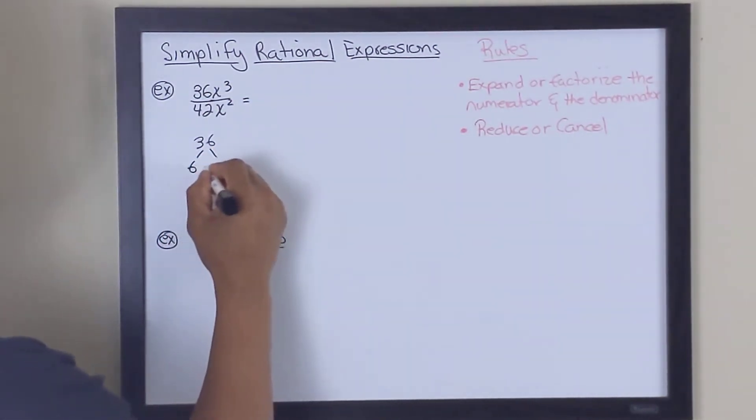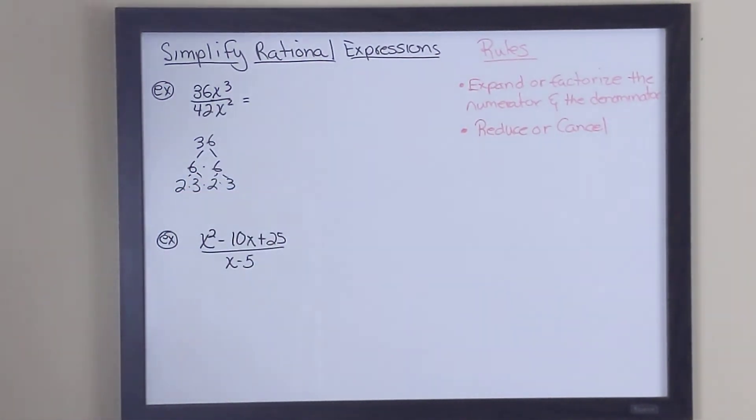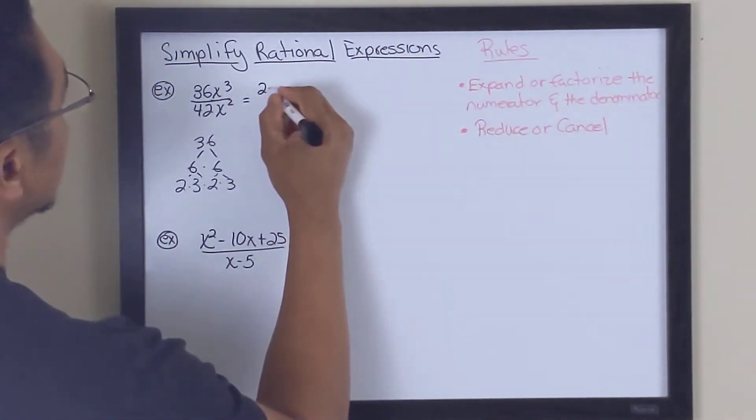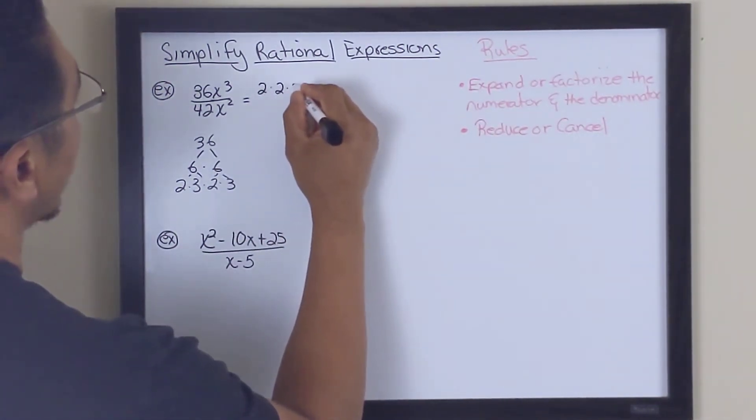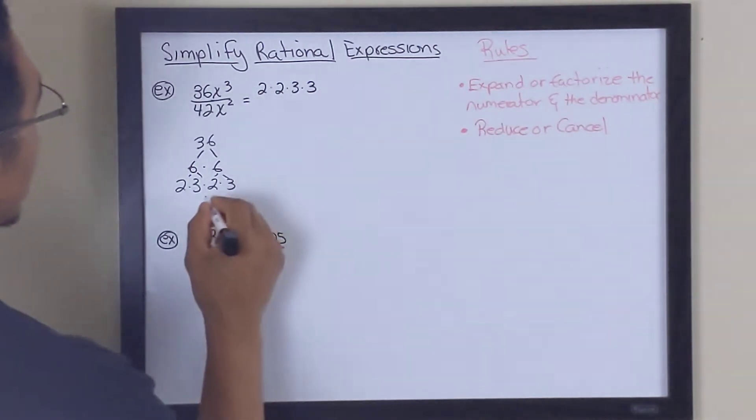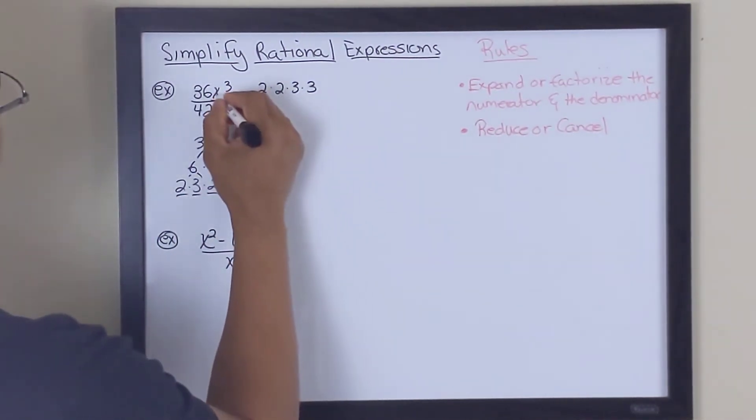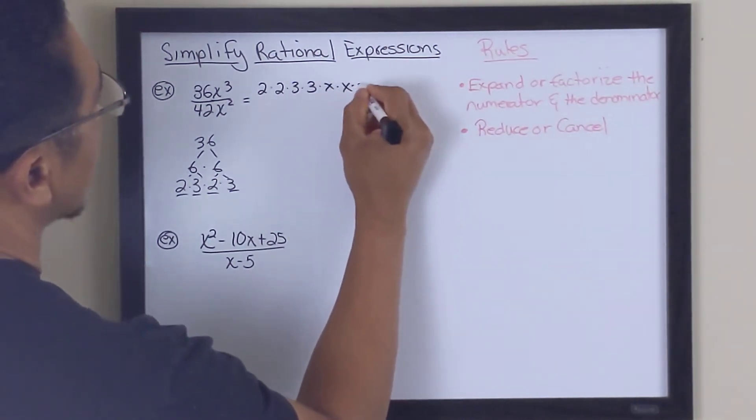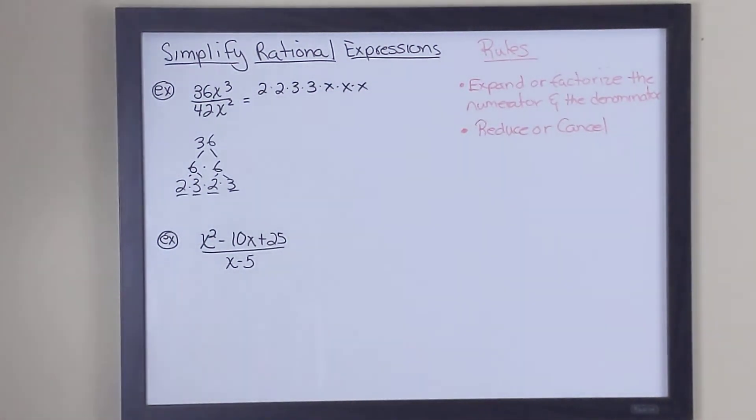And what we do is we'll prime factorize 36. Like this. So this becomes 6 times 6. This becomes 2 times 3. This becomes 2 times 3. So now, okay, 36 is completely broken down into its prime factors. I'm going to rewrite this as 2 times 2 times 3 times 3. There's 2 2's and 2 3's. And of course, x to the third power is simply x times x times x. That makes sense, right?